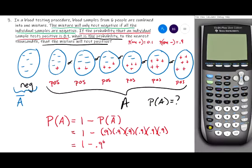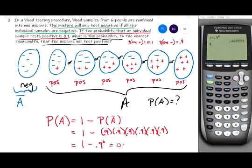Let's come over to the calculator for that. 1 minus 0.9 raised to the power of 6. We got 0.468559, and let's see, back to the problem, what is the probability to the nearest thousandth?